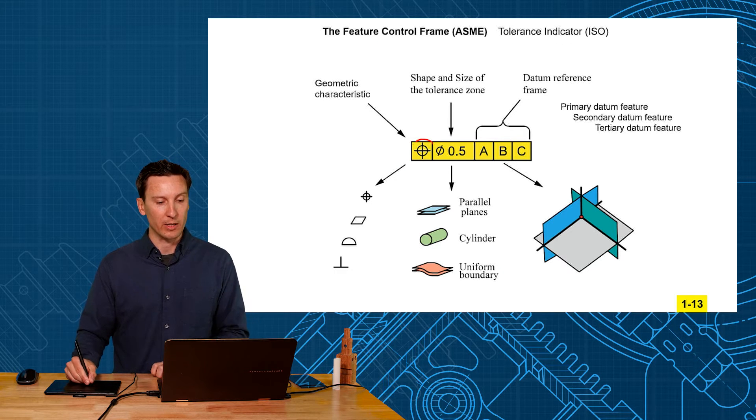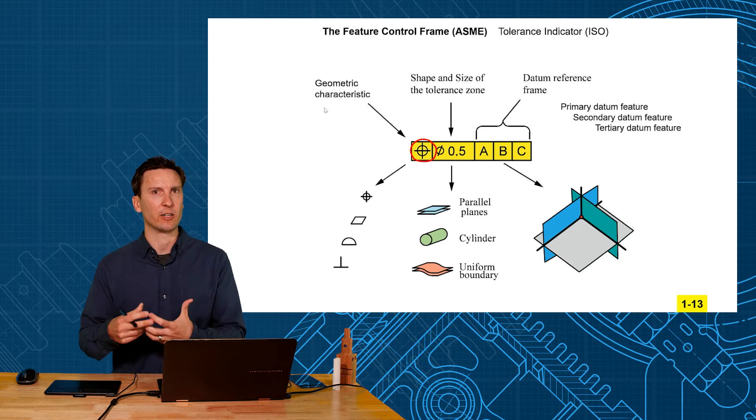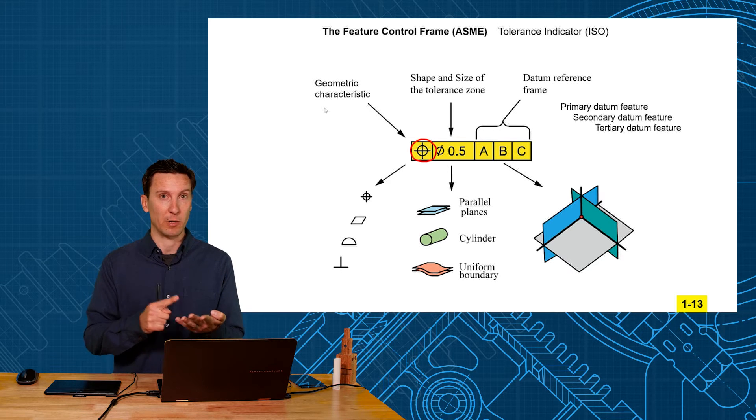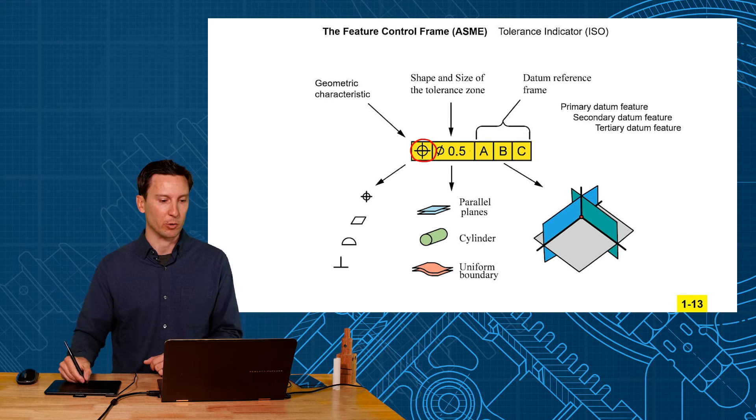The first compartment is where you put in one of those 12 geometric characteristics - the geometry characteristic of the feature you want to control. Its position, its flatness, its parallelism. Pick one of those symbols and put it in the front.